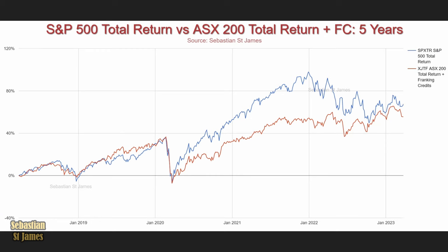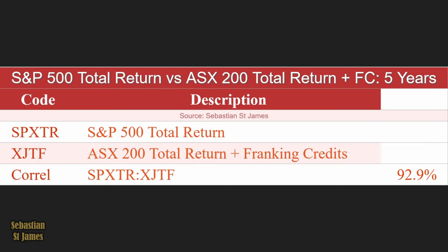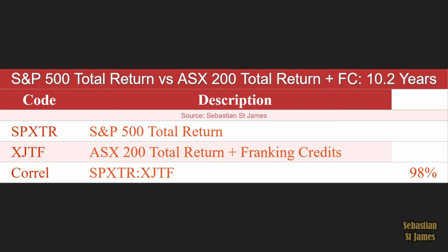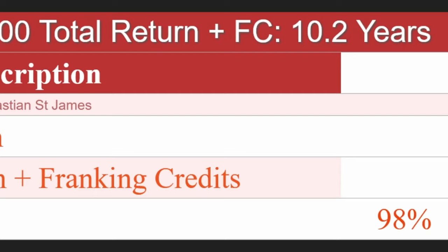America sneezes, Australia catches a cold — that's what they say about our stock market. How closely correlated are the stocks in Australia to the stocks in the US? The correlation between these two is 92.9% — extremely high. We're using the Pearson correlation coefficient. The reason you'd be asking this is: if the Australian stock market dropped suddenly, would investing in US stocks actually help smooth things out? Apparently the answer is no — 92% correlated, they're basically the same asset class. Over 10.2 years, the correlation is 98%.